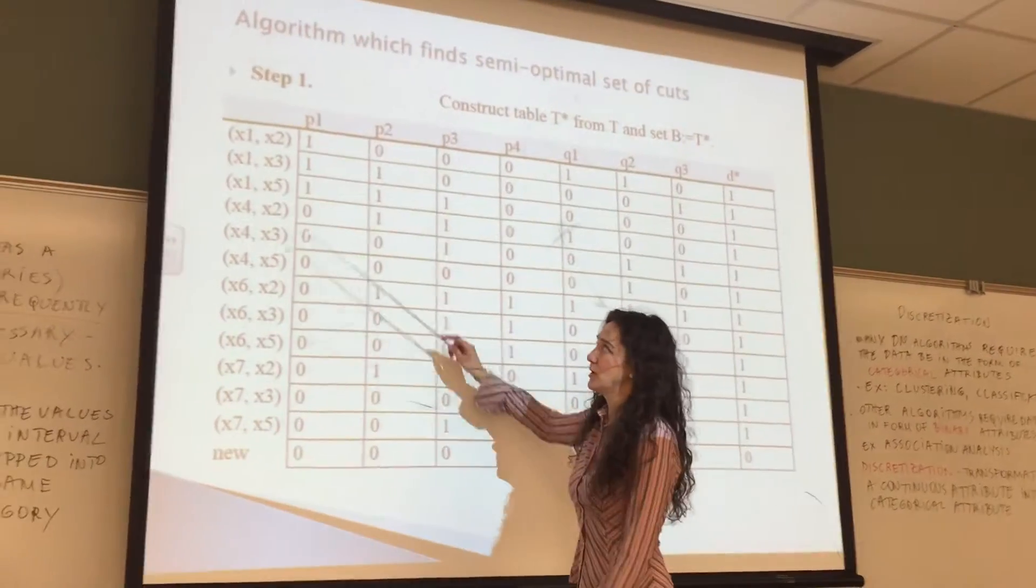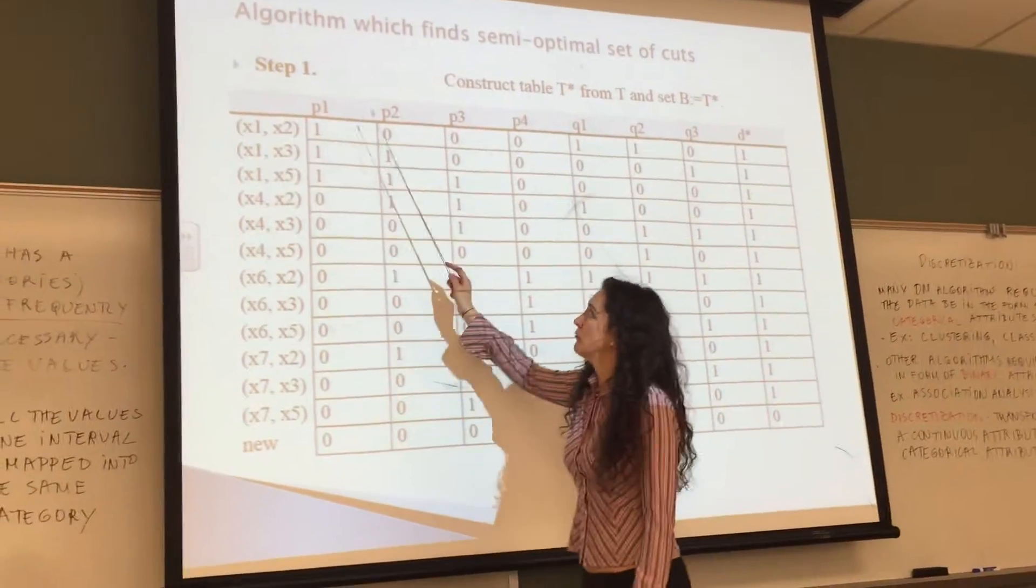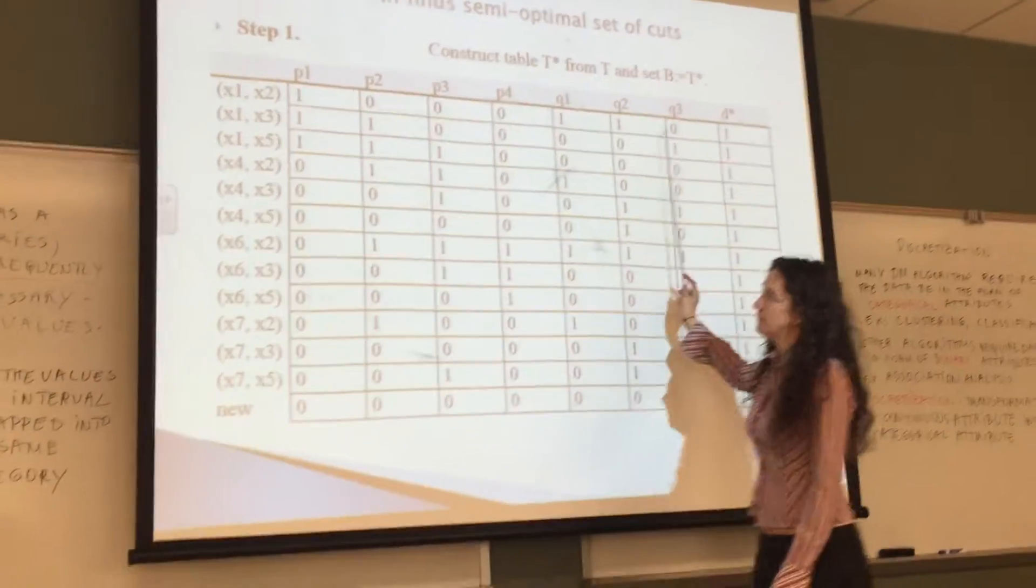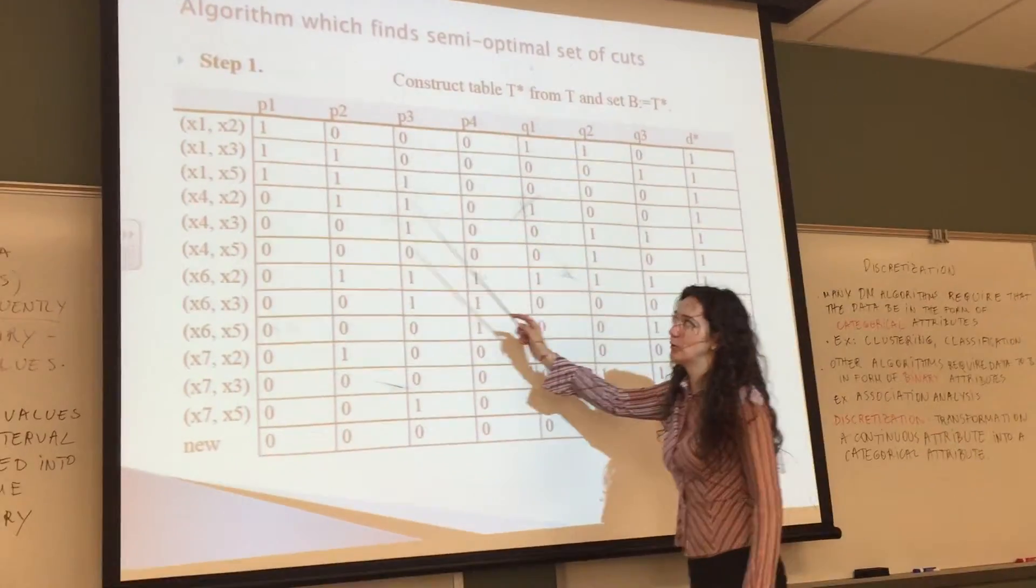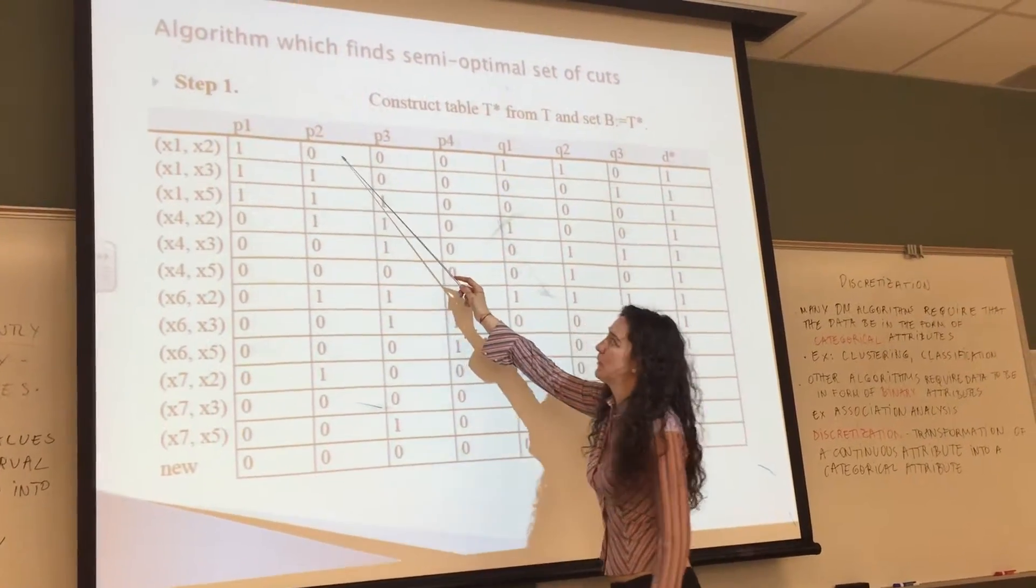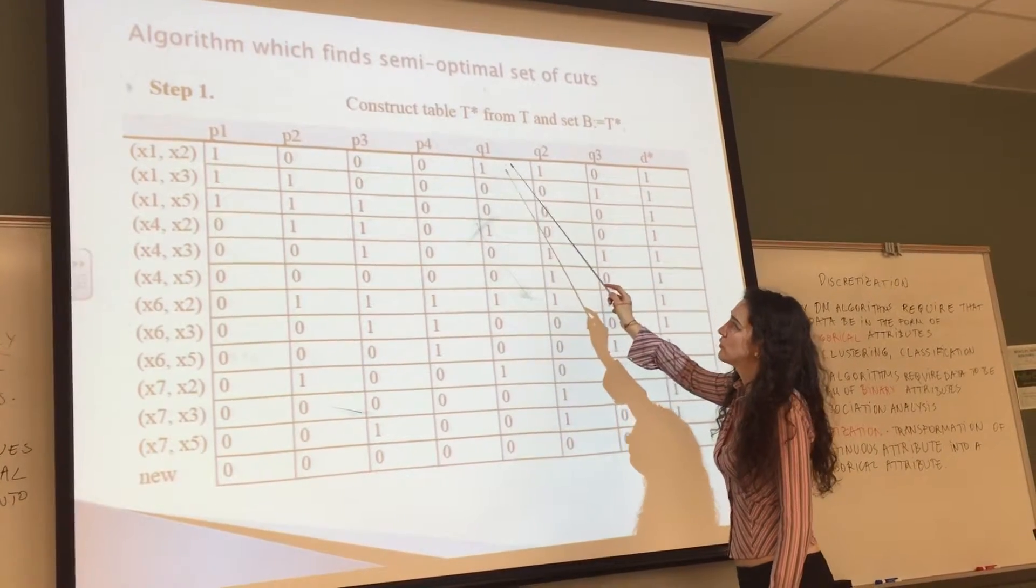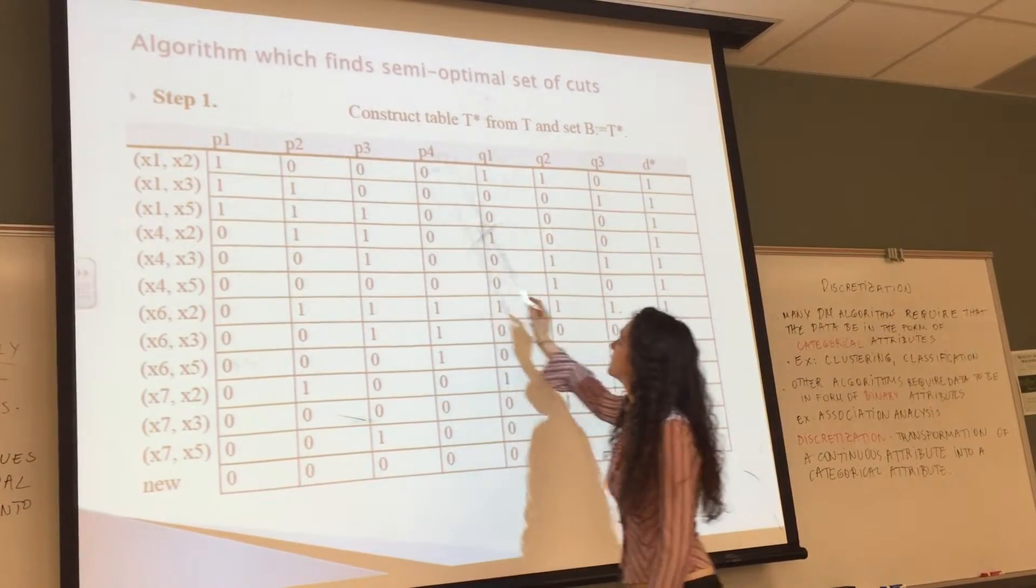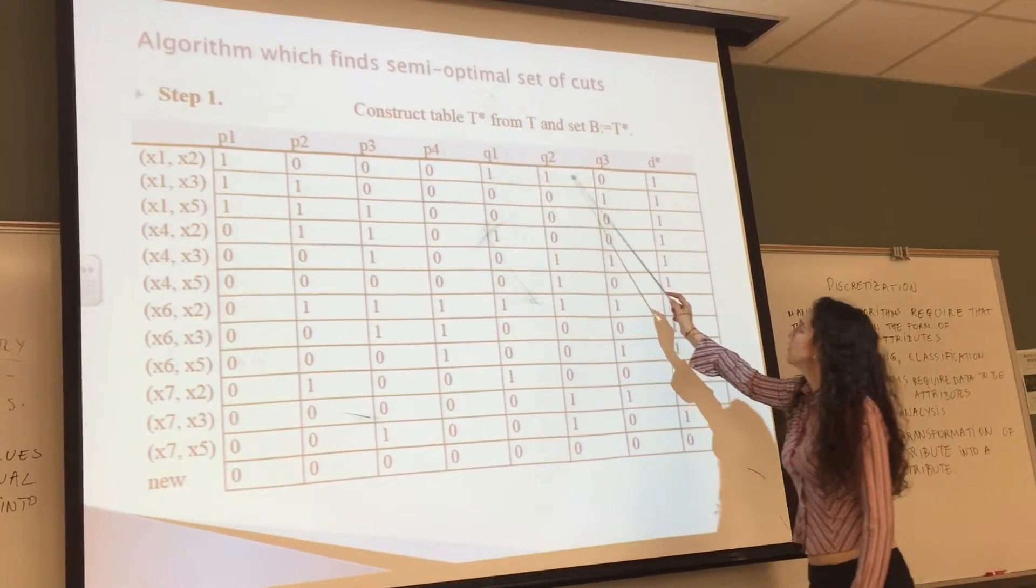It shows all the combinations that we are considering and which cup is used for them. If the cup is used, we place a 1. If not, we place a 0. So for X1 and X2, it is used P1, Q1, Q2.